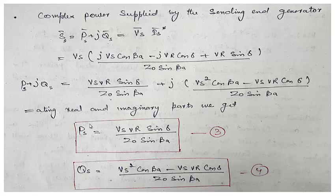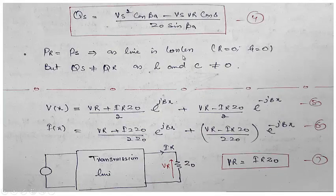This is how the values of real and reactive power appear when we consider the capacitance as well. Since the line is lossless, Ps will equal Pr at the receiving end — because there is no power loss in the line resistance, whatever real power is at the sending end will be received at the receiving end.